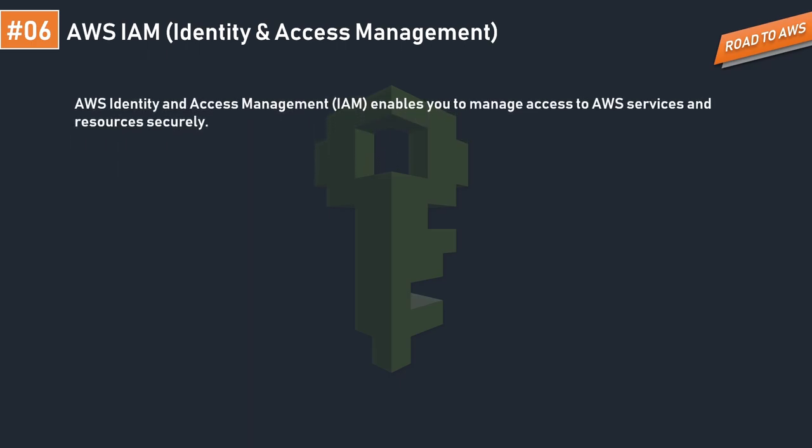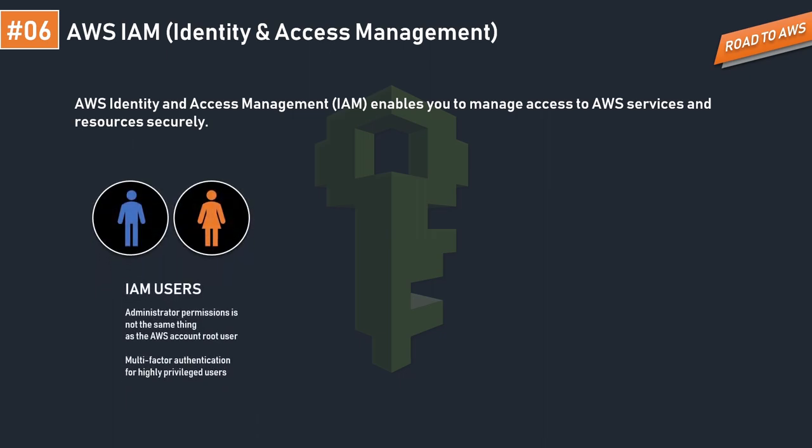IAM, or Identity and Access Management, enables you to manage access to AWS services and resources securely. The first key concept is the IAM user. An IAM user is any user who wants to access the AWS account. As the administrator, you create IAM users who have authentication credentials — an AWS username and password — which they use to connect to the AWS Management Console.